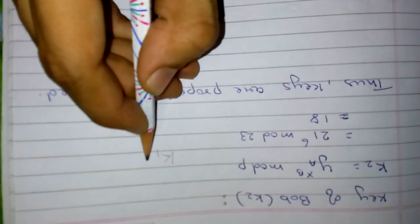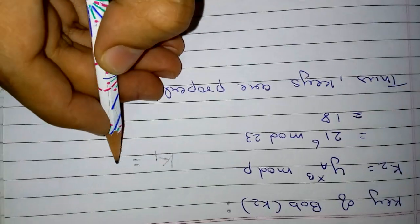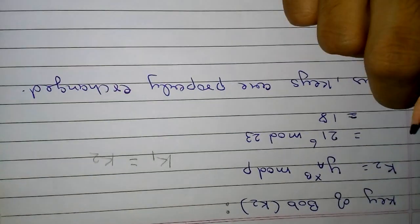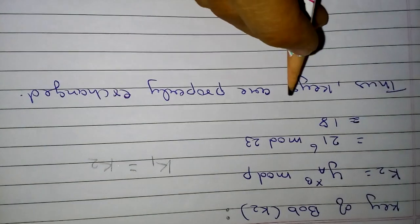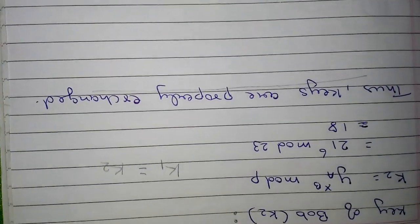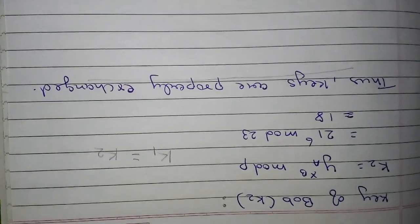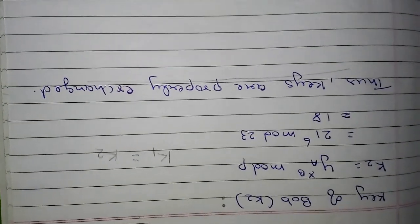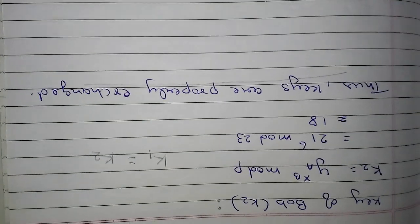Now you find that k1, that is key of Alice, is equal to k2, which means key of Bob. Basically both the keys are equal. This means that the keys were properly exchanged and there was no interruption in between, no one hacking in their messages. So this was all about Diffie-Hellman key exchange. Thank you.